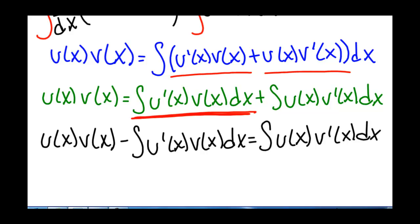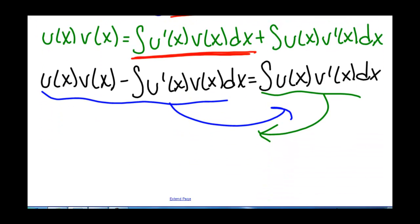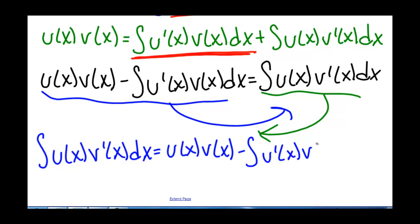We typically see this written with the integral on the left-hand side and the rest on the right-hand side. So rearranging, we get the integral of u(x) v'(x) dx equals u(x) v(x) minus the integral of u'(x) v(x) dx.